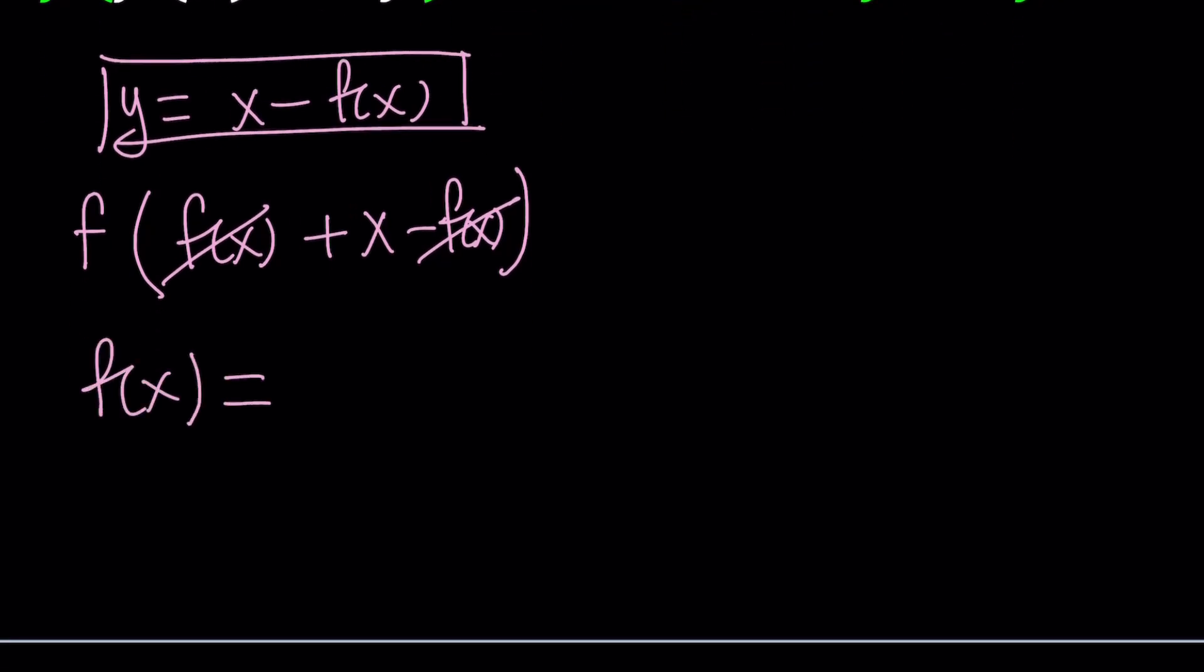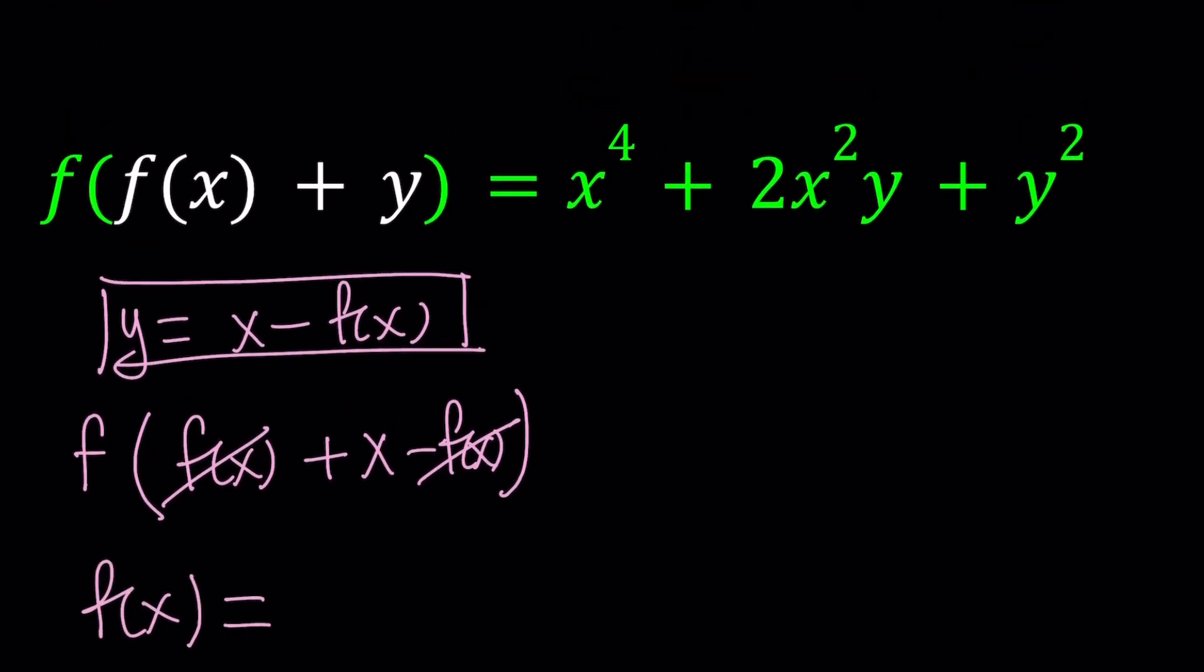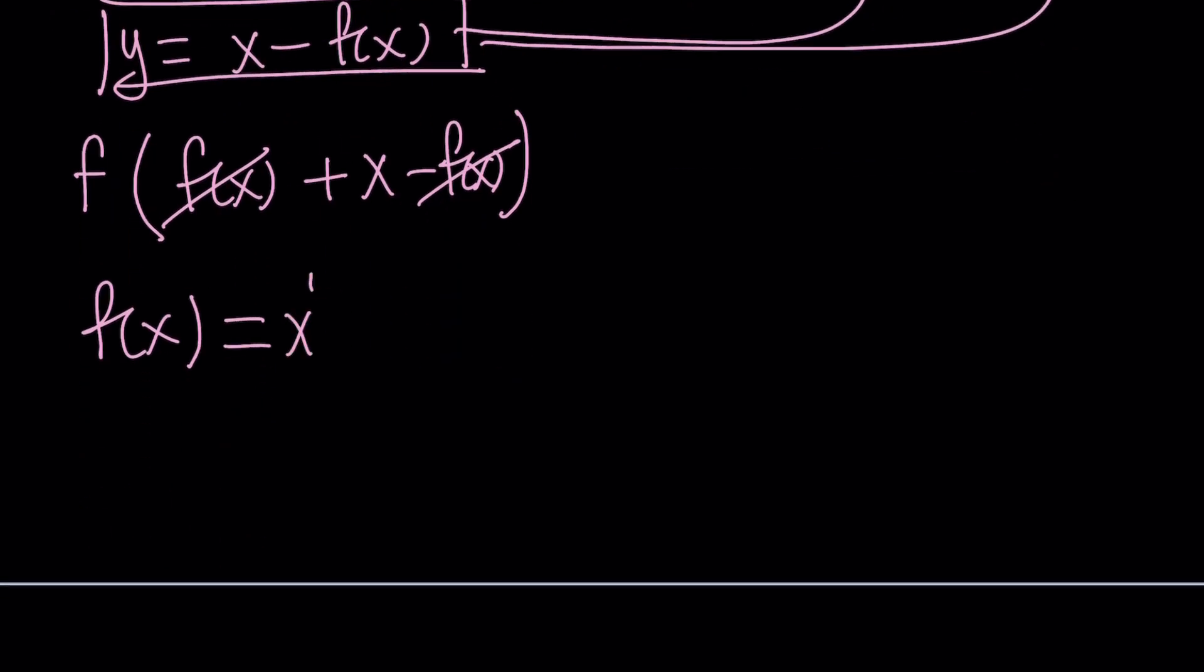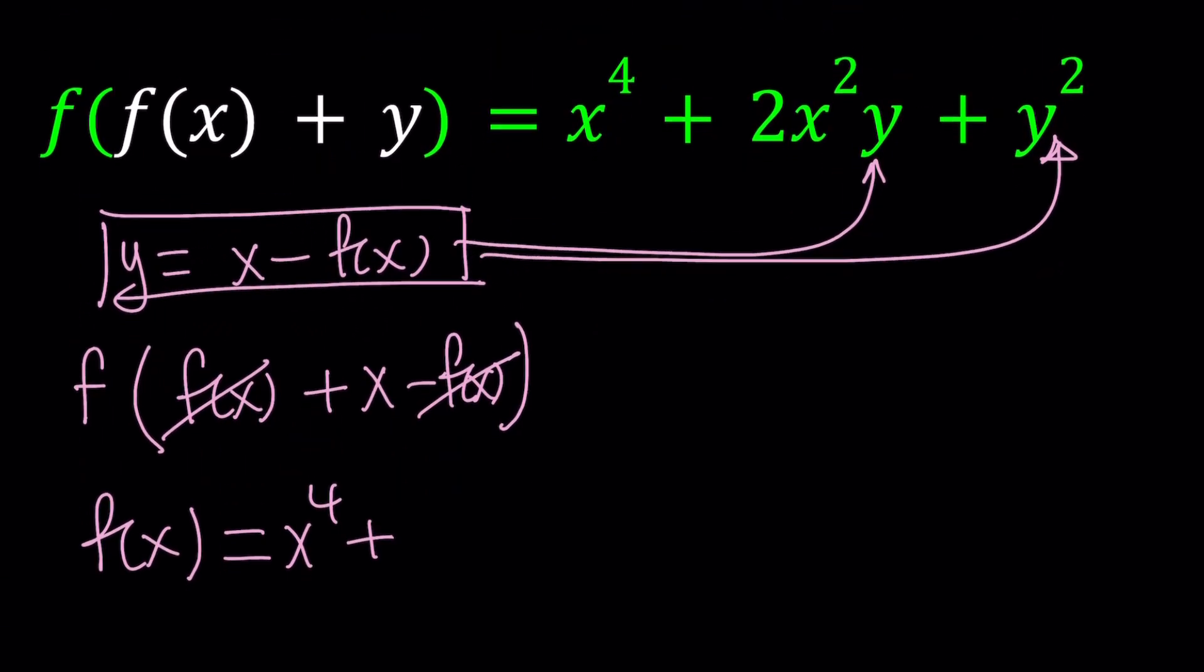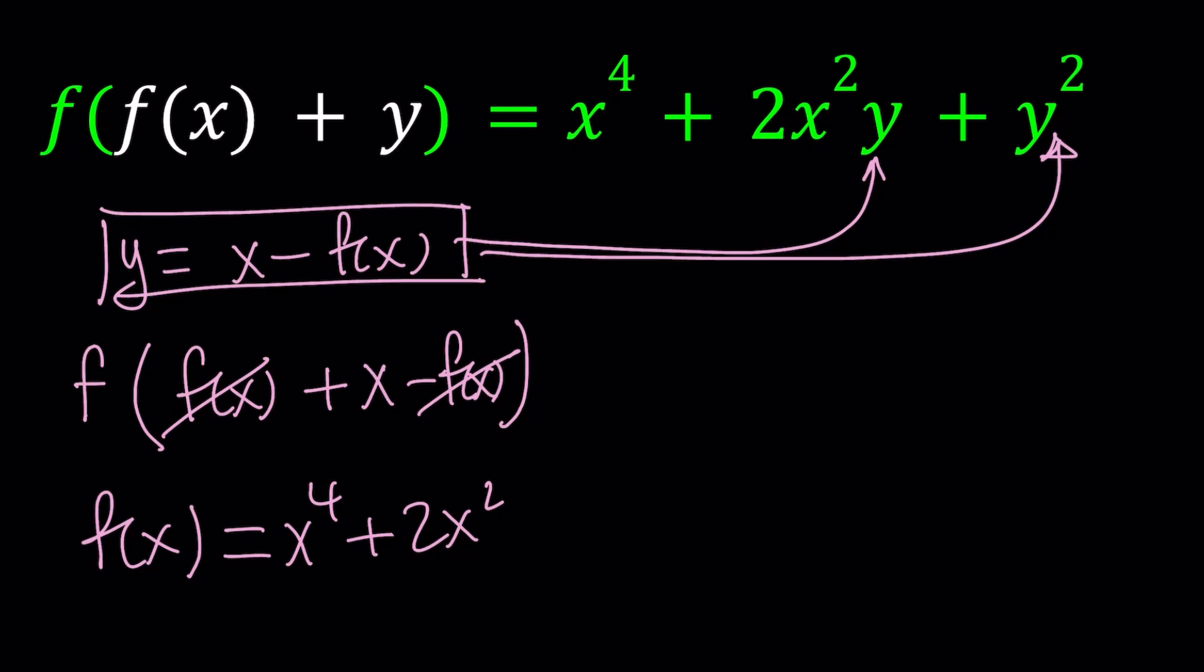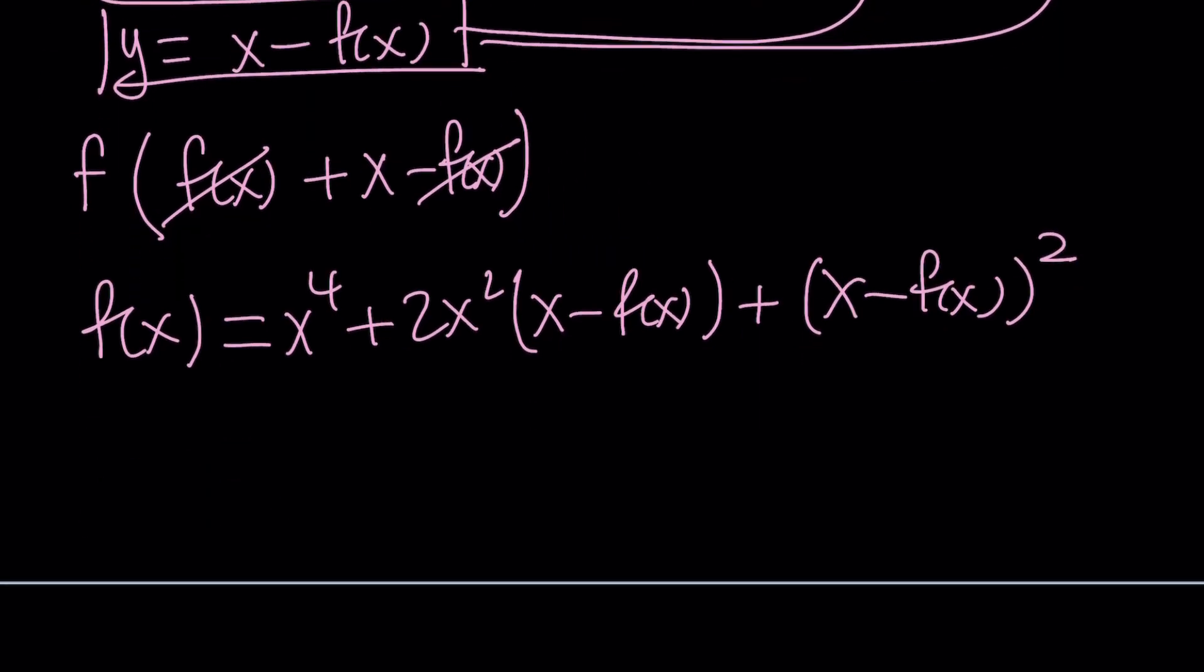Now on the right-hand side though, we have to do the same thing and that's going to be a little bit painful. Let's go ahead and do it. We're going to start with x to the fourth plus 2x squared, and then I'm going to replace y with x minus f of x, and then x minus f of x again but this time I have to square it. So this is what I get, pretty messy.